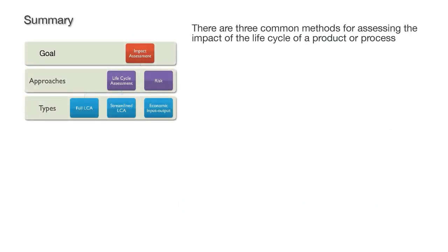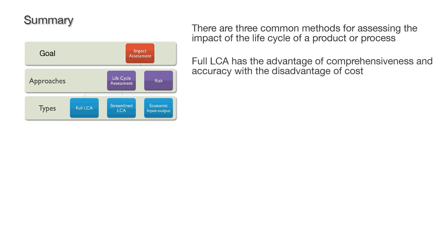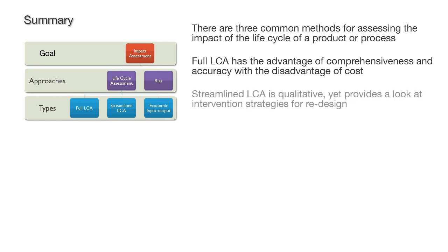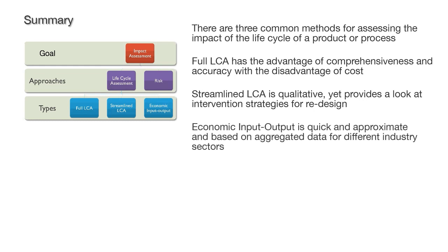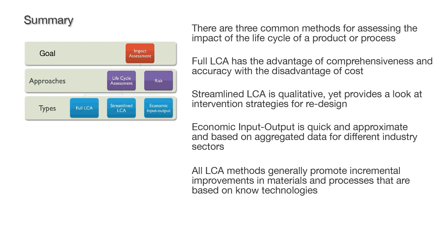There are three common methods for assessing the impact of the lifecycle of a product or process. Full LCA has the advantage of comprehensiveness and accuracy with the disadvantage of cost. Streamline LCA is qualitative yet provides a look at intervention strategies for redesign. Economic input-output is quick and approximate and based on aggregated data for different industry sectors. All LCA methods generally promote incremental improvements in materials and processes based on known technologies.